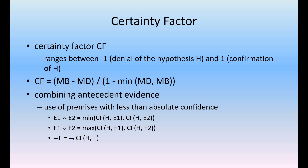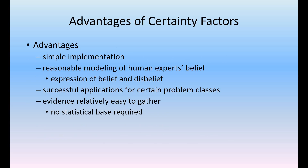It is better to follow this theory — certainty factor equals measure of belief and measure of disbelief. It practically observes the evidences; only when evidences exist does it believe, otherwise there is no belief, unlike the Dempster-Shaffer theory. The advantages of certainty factor rules are: very simple implementation compared to Dempster-Shaffer theory, reasonable modeling for human experts' belief, use of measures of belief and disbelief, successful applications for certain problem classes, evidence relatively easy to gather, and no statistical basis required.